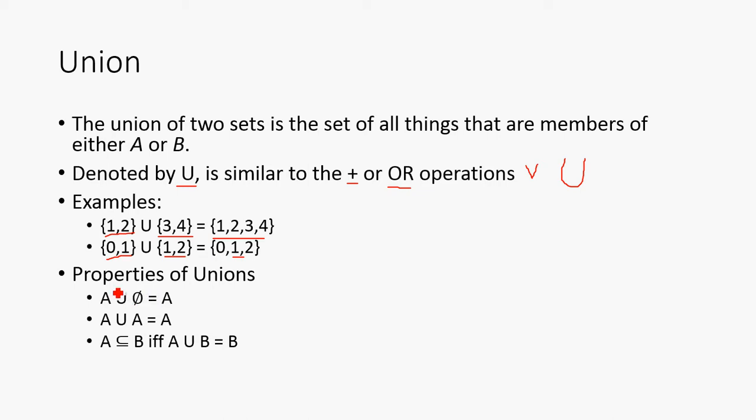So, here are a couple properties of unions. A union the empty set is just going to be A. A union A is going to be redundant, so it's just going to be A. And then A is a subset of B if and only if A union B is B.